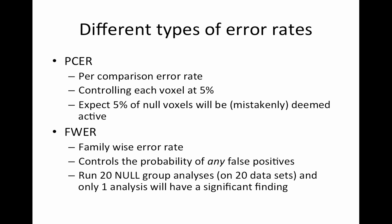Family-wise error rate controls the probability of any false positives — it's quite strict. It tries to prevent any false positives from existing at all within your study. If you ran 20 studies, only 5% — that is, only one study — will have any false positives. So if your data are completely null, only one will have any significant findings.